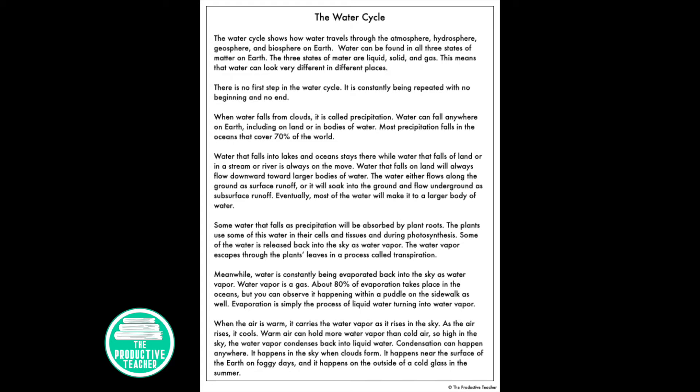Some water that falls as precipitation will be absorbed by plant roots. The plants use some of this water in their cells and tissues and during photosynthesis. Some of the water is released back into the sky as water vapor. The water vapor escapes through the plant's leaves in a process called transpiration.